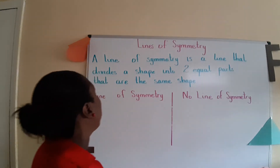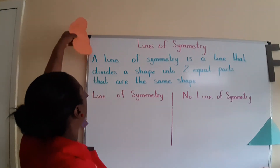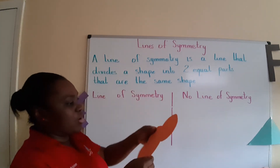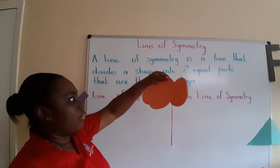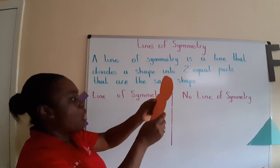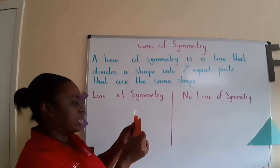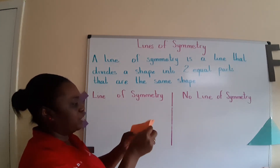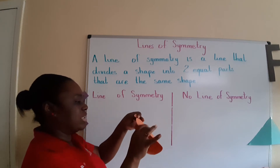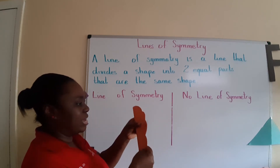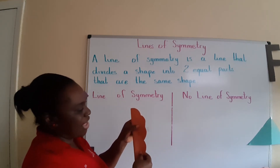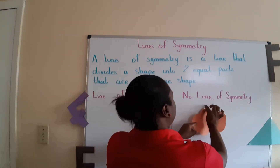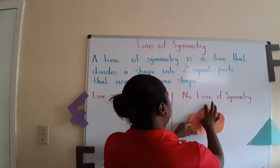So let's look at our shapes on the board. I'm going to start with this one — it almost looks like a cloud shape or popcorn. If I fold it, the sides don't really match. Fold it this way and it still does not match. So we can say that there's no line of symmetry.